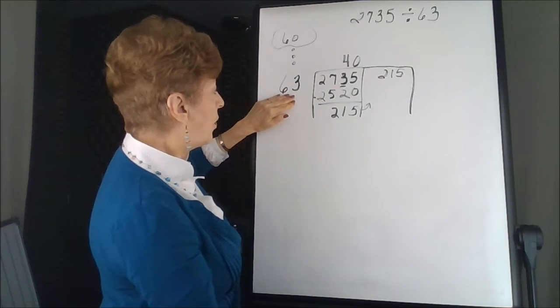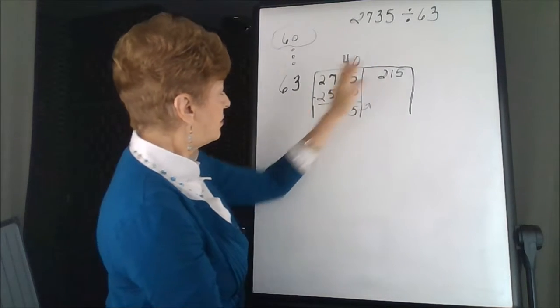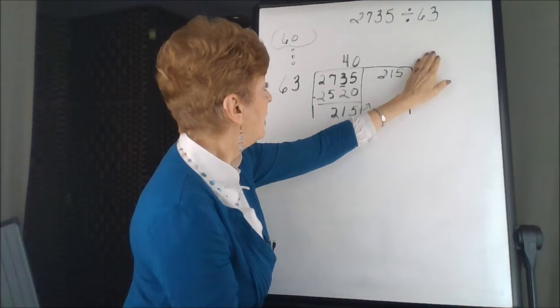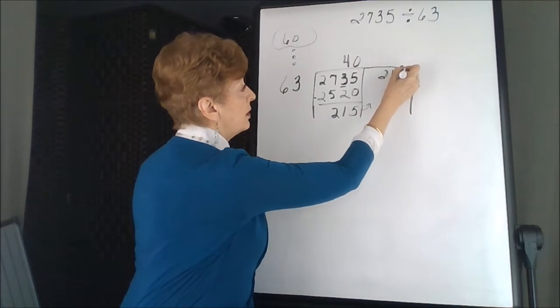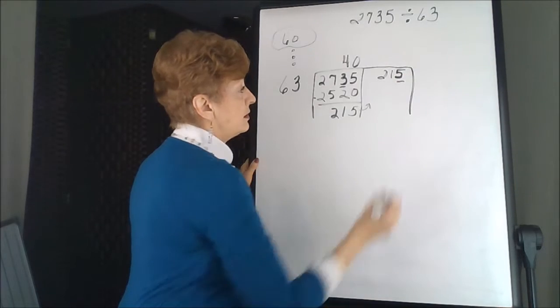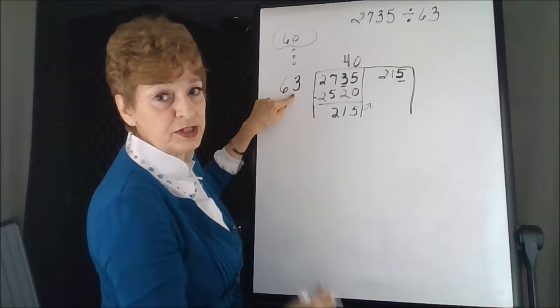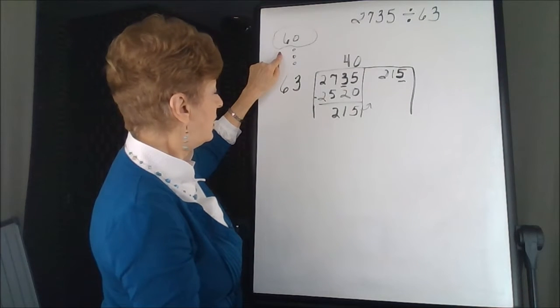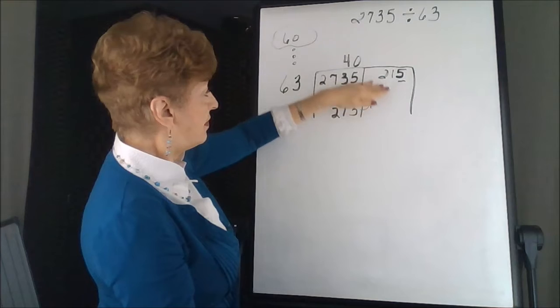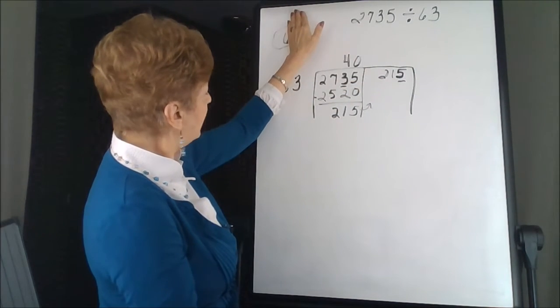I'm looking for where I'm going to start, where I'm going to put my first answer. So 63 divides into 2, too small, 21, too small. I have to use the complete number. So I'm going to darken the 5, just to remind myself, because this is where my thinking switches over to 60.